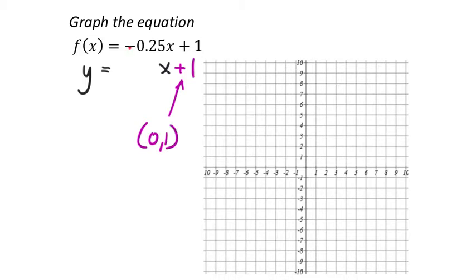But what's going on with the slope here? It's negative 0.25. What I'm going to do is change that into a fraction on my calculator. So I'm going to type in negative 0.25 and push the enter button.